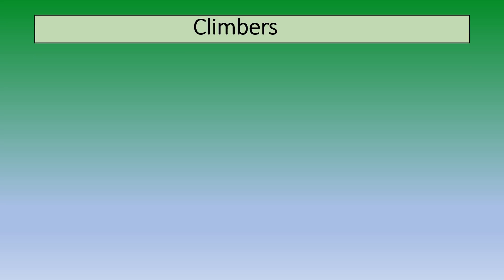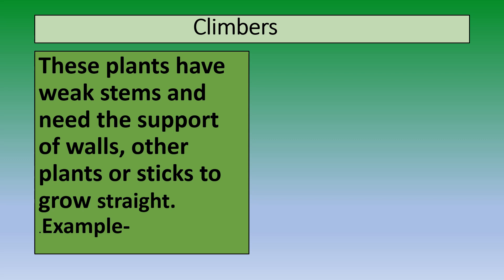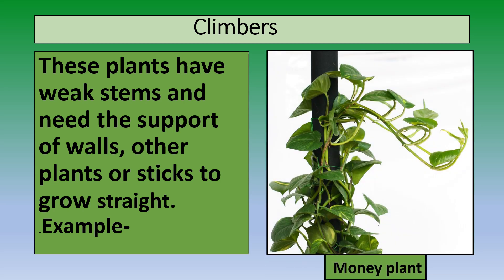Now let's learn about climbers. These plants have weak stems and need the support of walls, other plants, or sticks to grow straight. If you look at this picture carefully, you will see that the money plant has a weak stem and is taking the support of a stick to grow straight.